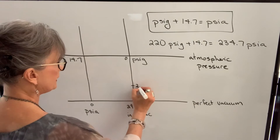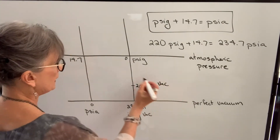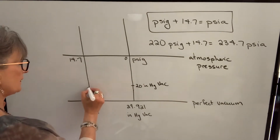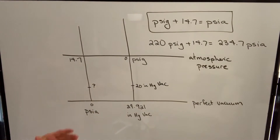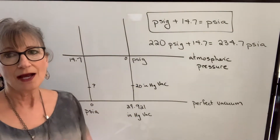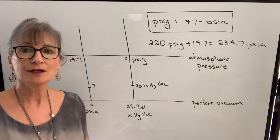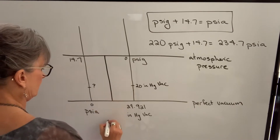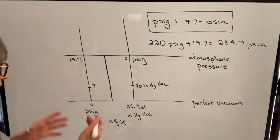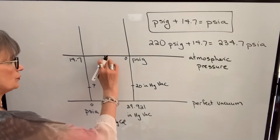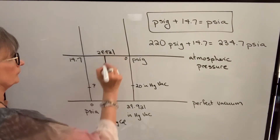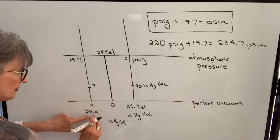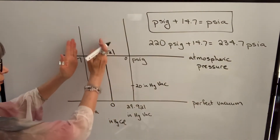Let's do an example of 20 inches mercury vacuum. That's about two-thirds of the way down from atmospheric pressure, or one-third of the way up from a perfect vacuum. I want to know what that's equivalent to in pounds per square inch absolute. I can't simply add or subtract something from that value or set it up as a direct proportion. Instead, I'll work with another pressure unit: inches mercury column, which is like barometric pressure — zero at a total absence of pressure, going up to 29.921. It's the opposite of the vacuum scale.